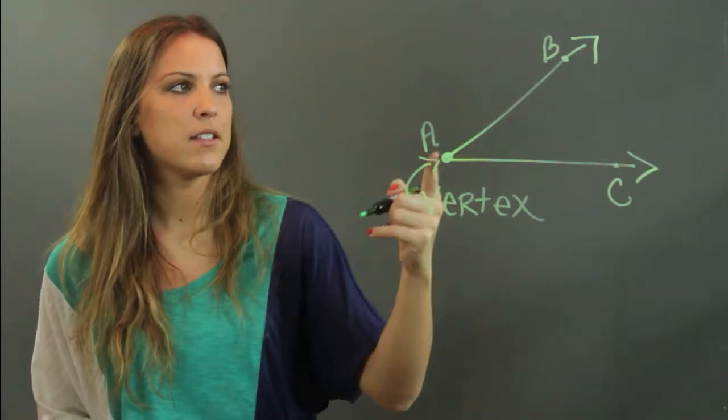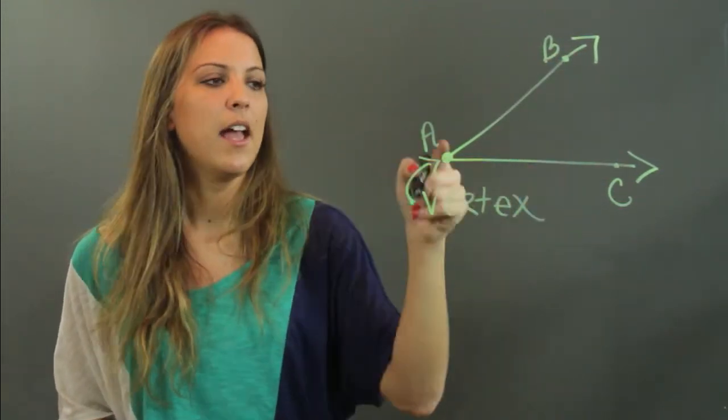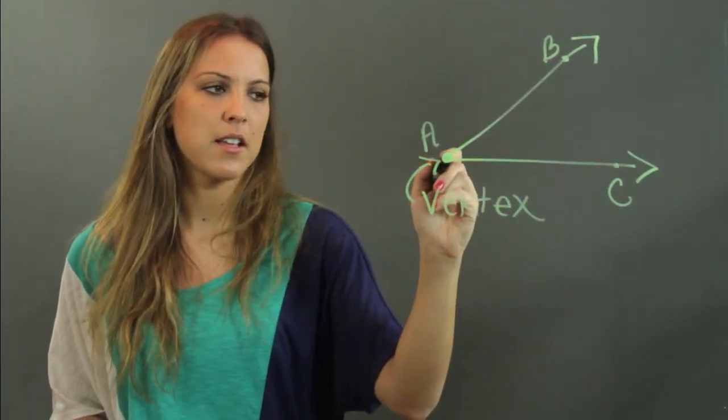So you have an angle made up of two rays, AB and AC, and they share a common vertex, which is A.